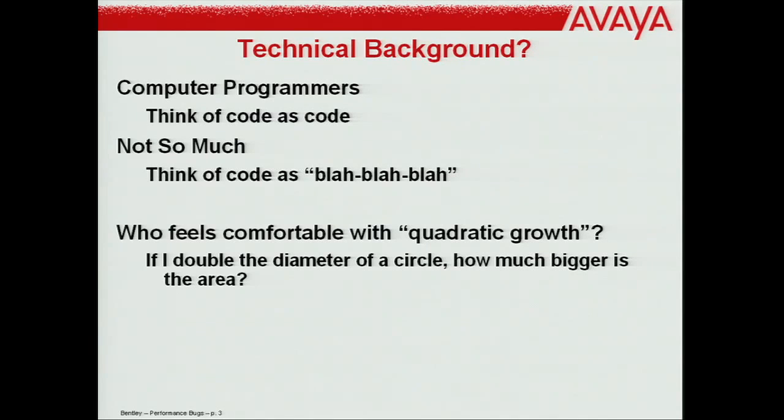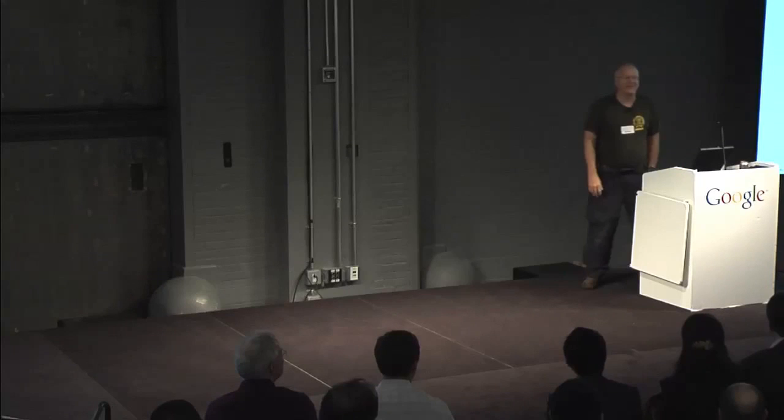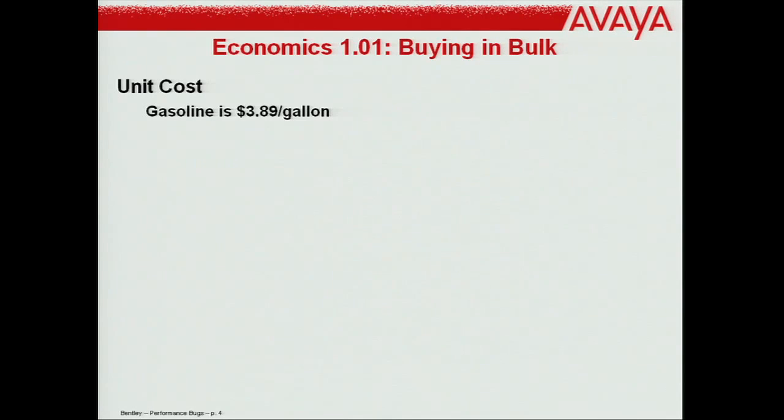If I double the diameter of a circle, how much bigger will the area get? Four — cool. Buying in bulk: some economics 101. If you buy gasoline, it doesn't matter if you have a moped or an ambulance. I filled up an ambulance the other day with about 30 gallons of fuel. That's unit cost — sometimes though there's economy of scale.